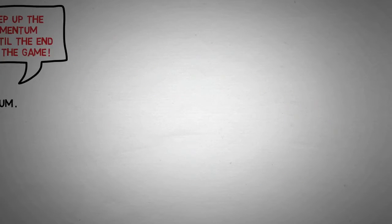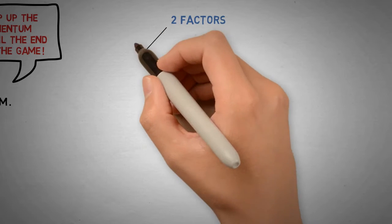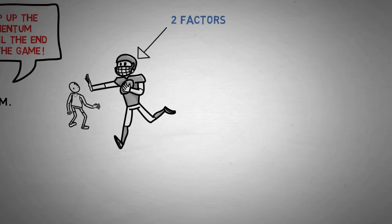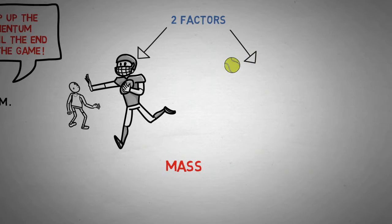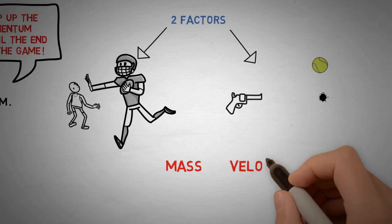But how much momentum an object has depends on two factors. The more massive an object is, the more difficult it is to stop it from moving, so the first factor is mass. And it's easier to stop a tennis ball than to stop a bullet because a bullet moves so much faster. This means our second factor is velocity.